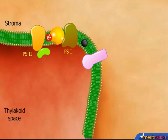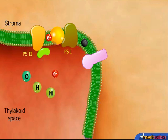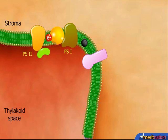Two water molecules bind to an enzyme attached to the reaction center. This enzyme splits the water into hydrogen and oxygen, releasing an electron that replaces the ejected electron in PS2.